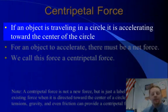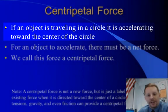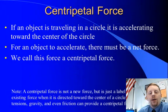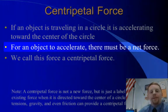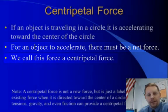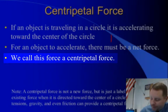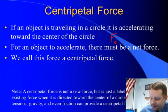If an object is traveling in a circle, it is accelerating toward the center of the circle. We call that a centripetal acceleration. Newton's second law says you must have a net force to have an acceleration. In this case, we will call the force that causes a centripetal acceleration a centripetal force, and we'll label it Fc.